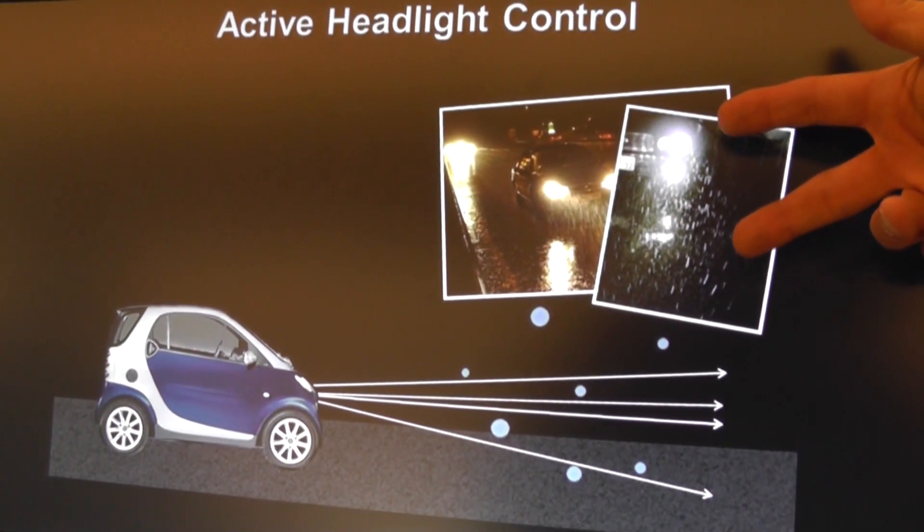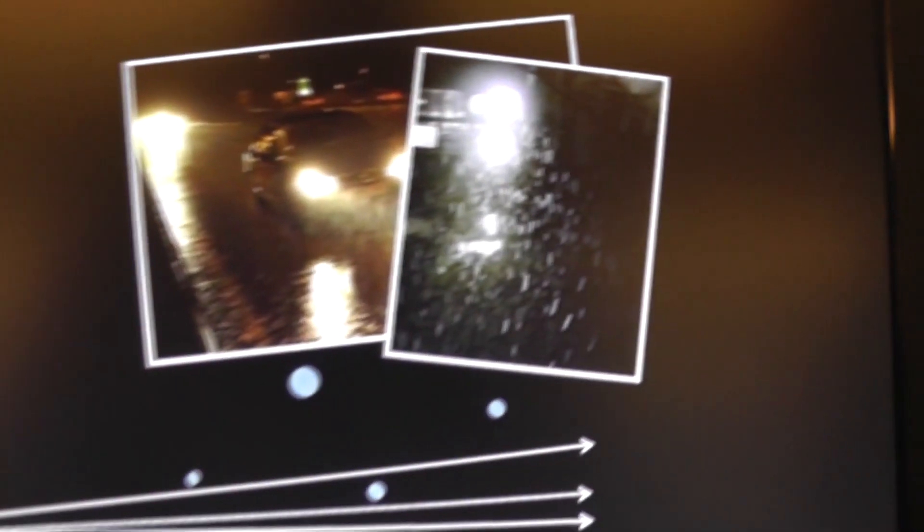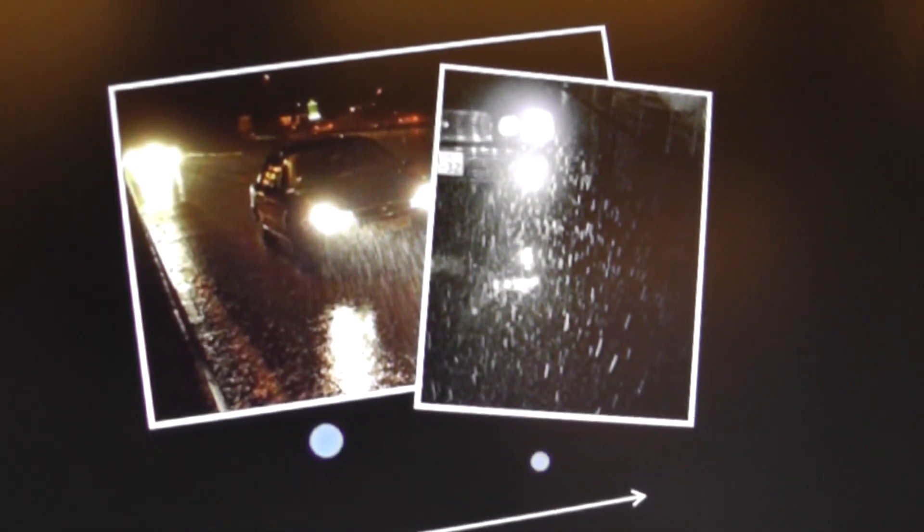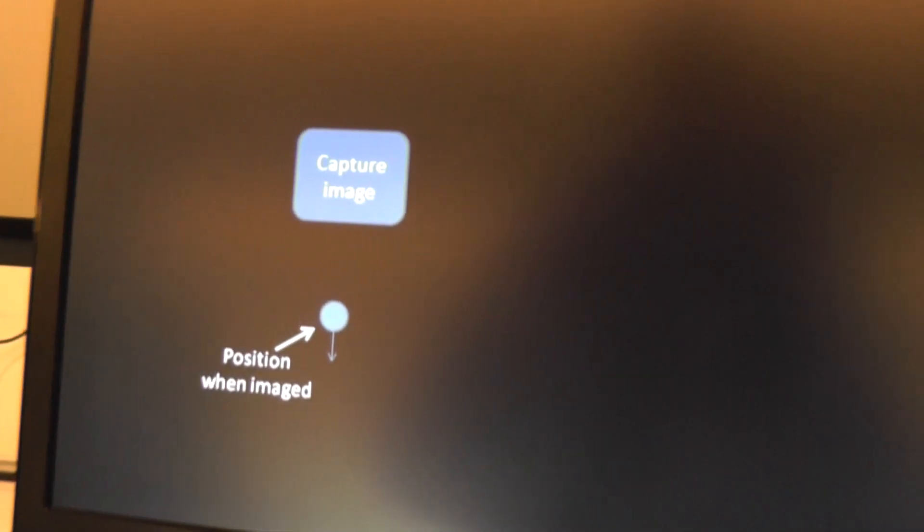This is what the headlight looks like when you're driving down the road in a heavy rainstorm. It's very distracting and it gets away from seeing the road itself.